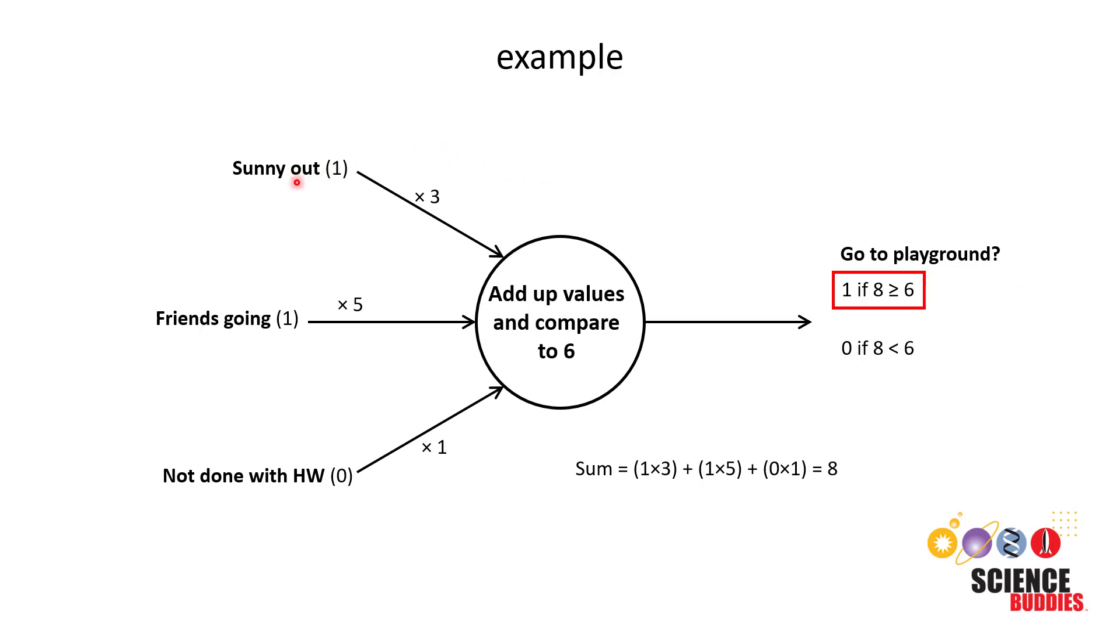We can change our inputs to see how the output would change. For example, let's say that it is no longer sunny out, so this input is now a zero. If we redo the math, we will see that the new sum is now five, which is less than six, so the output would be zero—we should not go to the playground. But you might look at this and say wait a minute, I really want to see my friends and I don't care if it's not sunny out, so that is not right. I need to change this somehow so it would output the correct answer for this set of inputs, which would be one—I should still go to the playground.